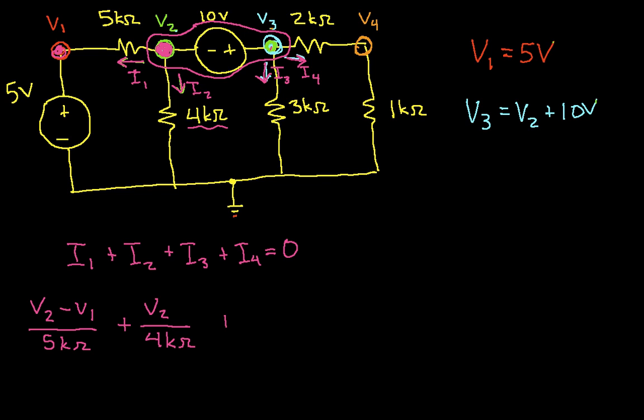I3 is going to be V3 over 3k ohms. It's the voltage at this node with respect to the reference divided by 3k ohms. And I4 is going to be V3 minus V4 over 2k ohms, and this will equal zero. By applying Kirchhoff's current law to the supernode, I now have a second equation that I got from nodes 2 and 3.